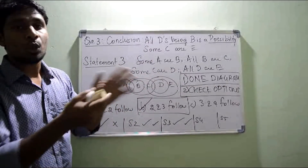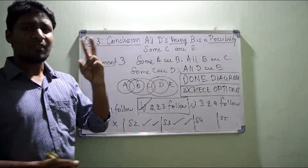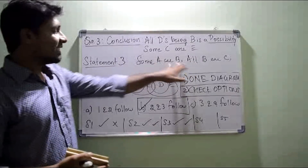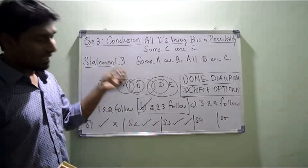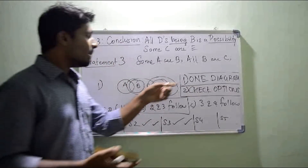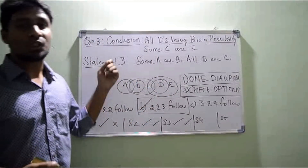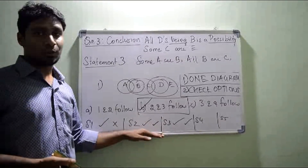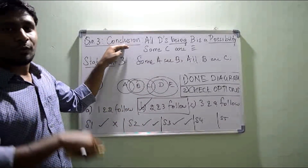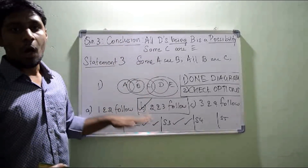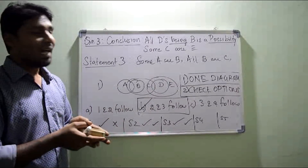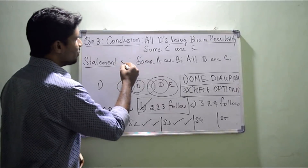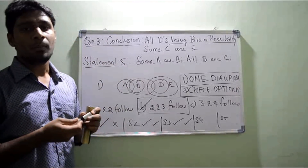One diagram for one statement — don't go for possible diagrams for all the statements if there are a lot of statements. If there are only two sentences in a statement, then you can go for some more possible diagrams. But if there are more than two or three statements, draw one diagram — that is more than enough. Whenever you draw a diagram and check conclusions, you will get true or false. After finding true or false, parallelly check with the options. You may stop at statement one itself — you don't need to go further. For some questions, you can also try the reverse model — solve statement five first, then four, three, two, one.